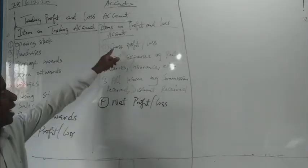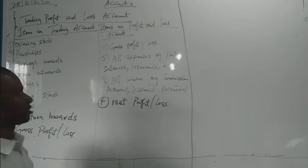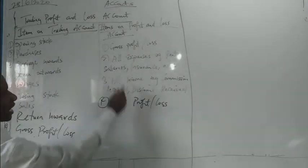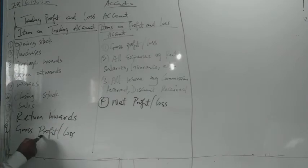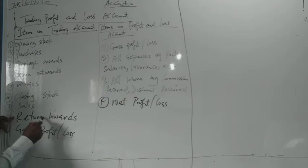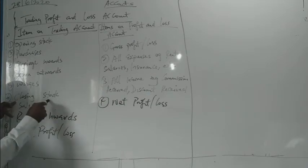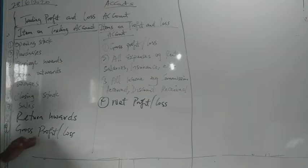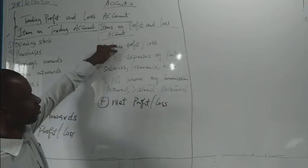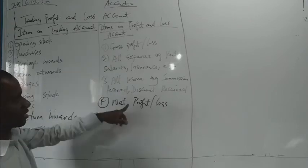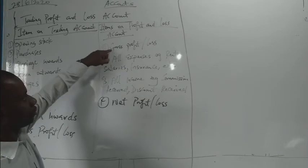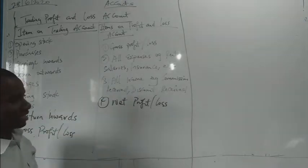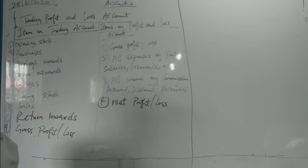Then you go to the profit and loss section. You will have the gross profit and add all the overhead expenses. If you have gross profit, you add it with indirect income; if you have gross loss, you add it to the expenses. Gross profit arises when the net sales figure is greater than the cost of goods sold. After doing it, if you subtract expenses from gross profit plus income, you will have net profit or net loss.